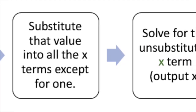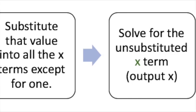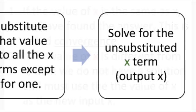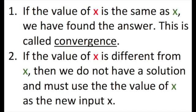We then solve for the unsubstituted x. This value is called the output x. If the input and output values match, we have a solution, and this is called convergence. If the values don't match, we must repeat the steps until they do.